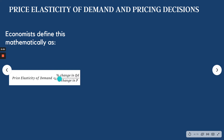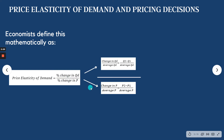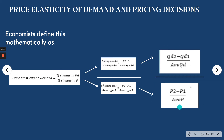Mathematically, price elasticity of demand equals the percentage change in quantity demanded over the percentage change in price. The percentage change in quantity demanded is the change in quantity demanded over the average quantity demanded — that is (Q2 minus Q1) over average QD. The percentage change in price is (P2 minus P1) over average P.